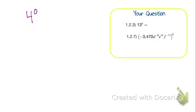The zero exponent rule: any number raised to the zero power, whatever it is, the answer is going to be 1. So if I have negative 6 to the zero power, the answer would be 1.